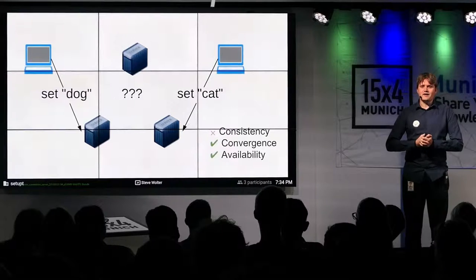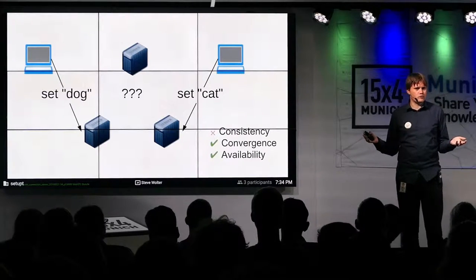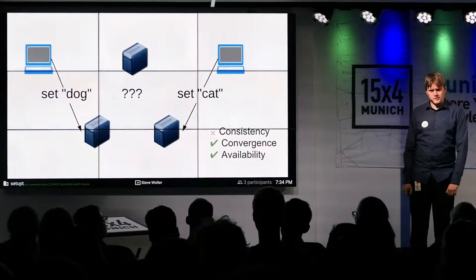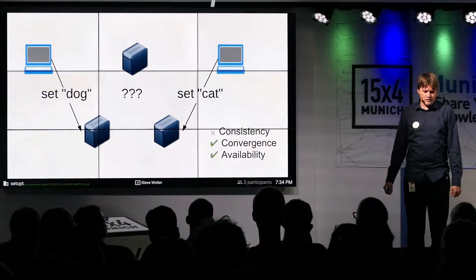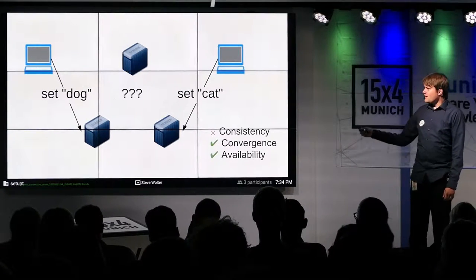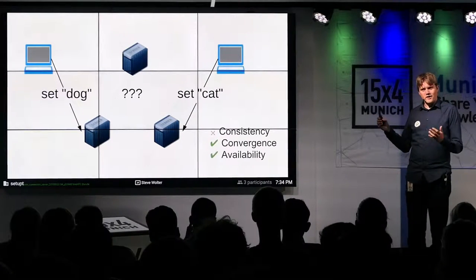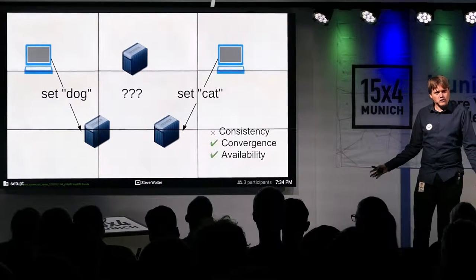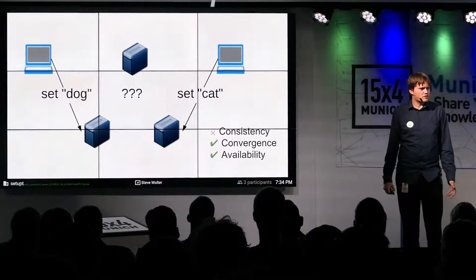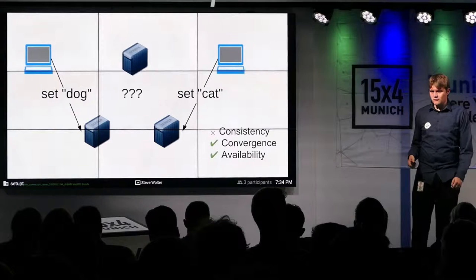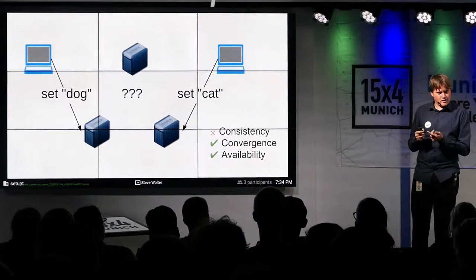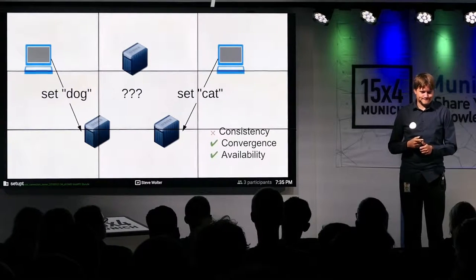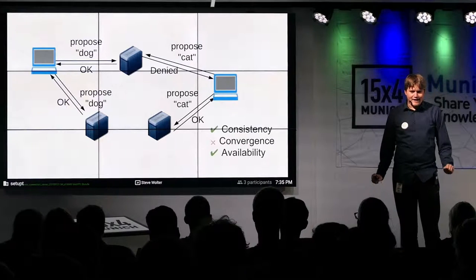The second approach is anarchy. You can ask any server to set a password, and the server will immediately do so. The first client goes to one server and sets the password to 'dog' — done. But before that server can tell anyone else, the bottom-right server gets a message to set the password to 'cat' and accepts it. Now we have an inconsistent state. This system does converge and is available, since if any server goes down you can go to another, but it's not consistent.